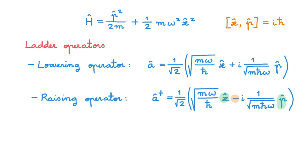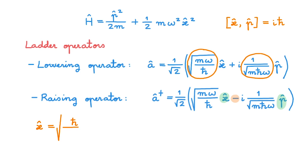You may be thinking: what a strange linear combination that looks completely taken out of a hat. At this stage we're just going to accept that their definition includes these prefactors, and we will also see later that this choice leads to a very convenient expression down the line. We're also for now going to accept that these operators are called raising and lowering operators, collectively called ladder operators, but the rationale for these names will become clearer later in this same video. We can invert these equations to find the position and momentum operators in terms of the ladder operators — the final result is that the position operator equals this and the momentum operator equals this.